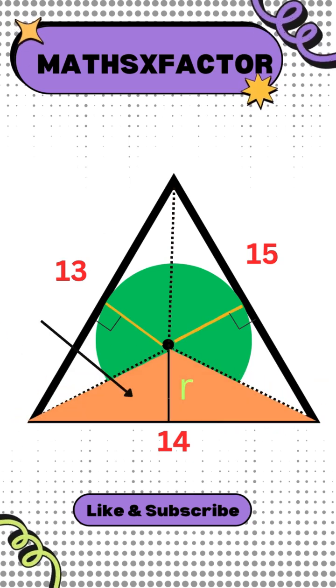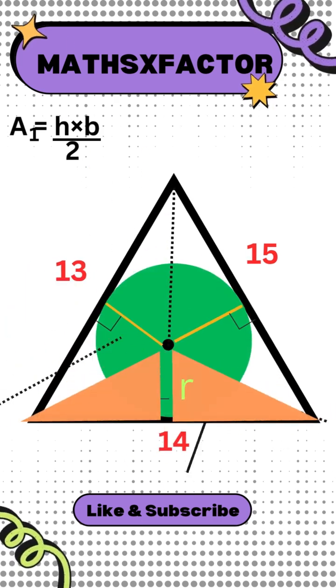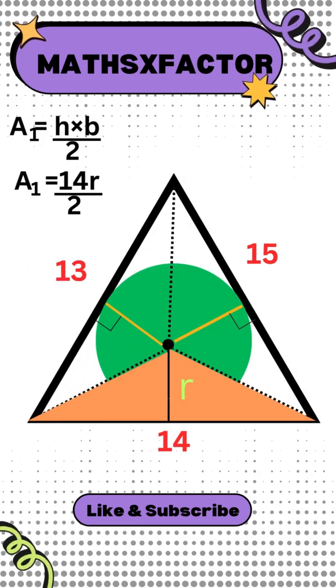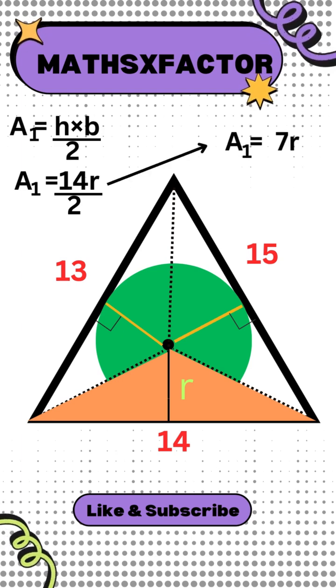Now can you find the area of this triangle? Yes, I know how to find it. We know that the area of a triangle is half of the product of base and height. The value of base is 14 and height is R. So the area of this triangle is 7 times R.